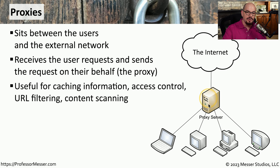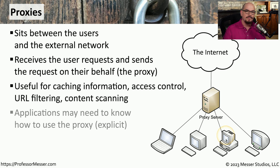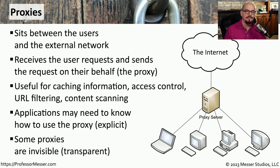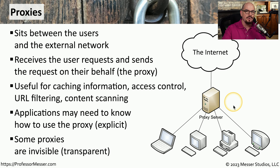Access control can be based on a username and password provided by the end user, or it may be based on an IP address. With some proxies, we have to tell our application to use a proxy for communication rather than communicating directly to a server. We refer to this as an explicit proxy because we are explicitly configuring that proxy in the application config. There are also proxies that don't require that type of configuration and can simply work without any special configuration on the client. Since this proxy is able to work without the end user even realizing it's there, we refer to it as a transparent proxy.